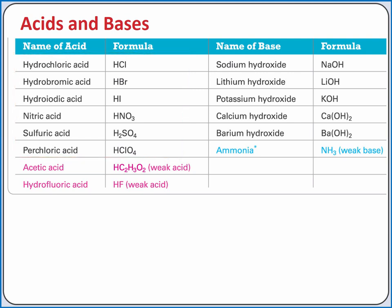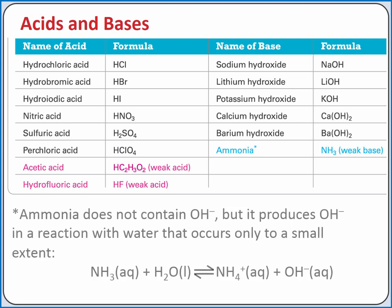Common strong bases are hydroxide salts. Nitrogen bases like ammonia are weak bases. Although they do not contain hydroxide, they can react with water to remove an H-plus ion, resulting in the production of hydroxide from water. Since they are weak bases, the reaction only occurs to a small extent.